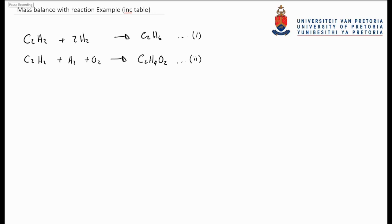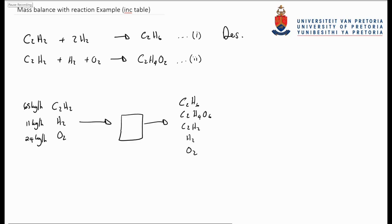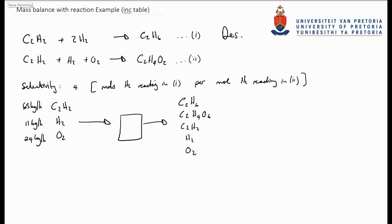Let's assume that we have the following two chemical reactions and that Reaction 1 is the desired reaction. We are given the following system and told that 65 kg per hour of C2H2 is fed to the reactor with 11 kg of H2 and 24 kg of O2. We are given a selectivity where 4 moles of H2 is reacting in Reaction 1 for every mole of H2 reacting in Reaction 2. We are asked to calculate the full mass balance, all species in and out, as well as the percentage excess, the conversion of the C2H2, and the yield of the C2H6 from the desired reaction, based on the C2H2 fed.